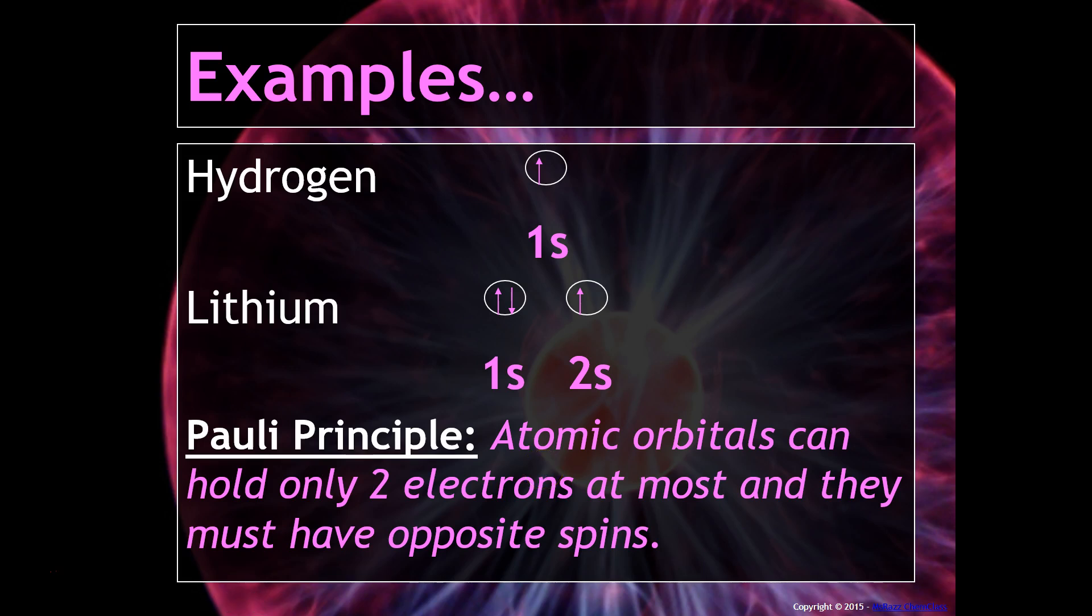So basically we say that the Pauli principle is where atomic orbitals can only have two electrons in them and they have to be opposite in terms of their spin. So that's what the up and the down means.